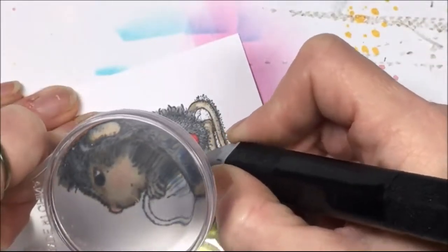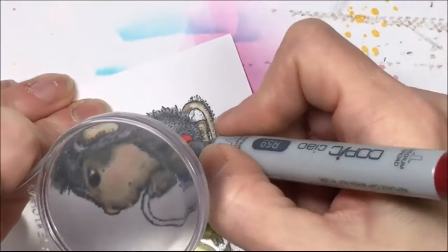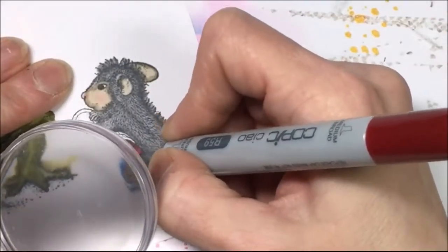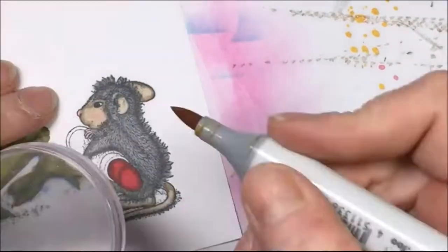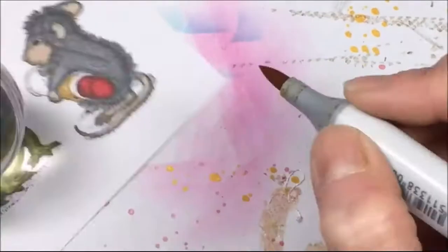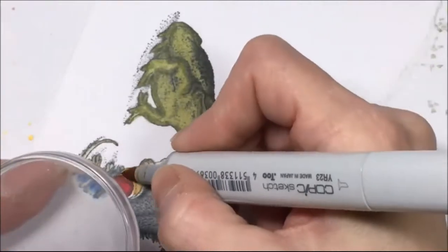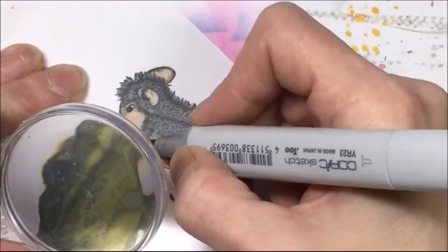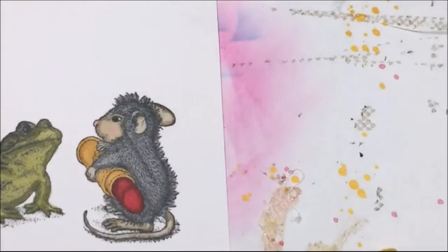Then I do some shading with the Copic. What's nice about these House Mouse stamps is you don't have to do much shading because there's lots of stippling and shading already on the stamped image. For the lipstick barrel I'm going in with a yellow gold with my Copics.